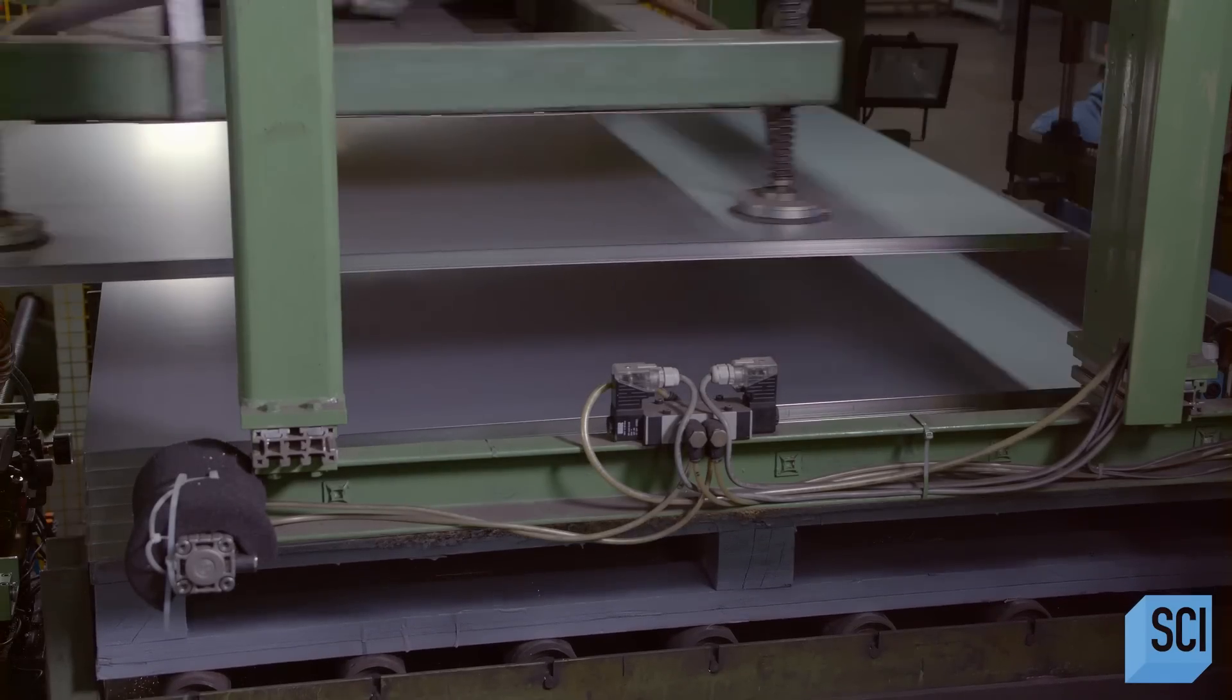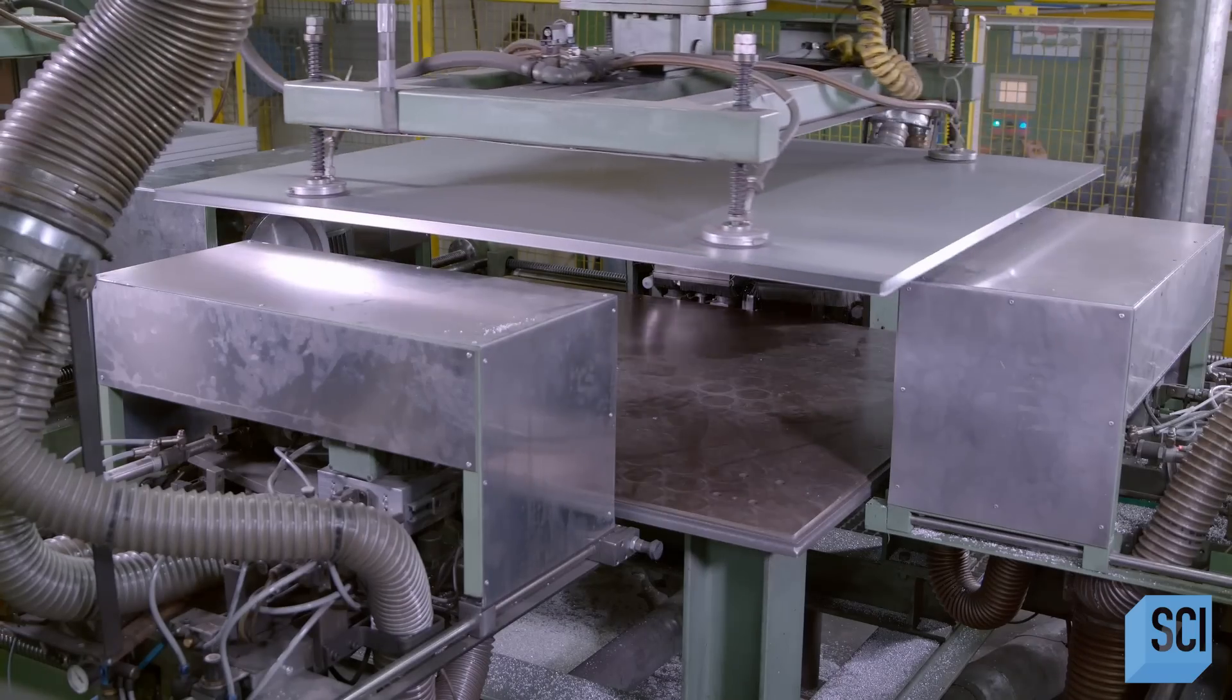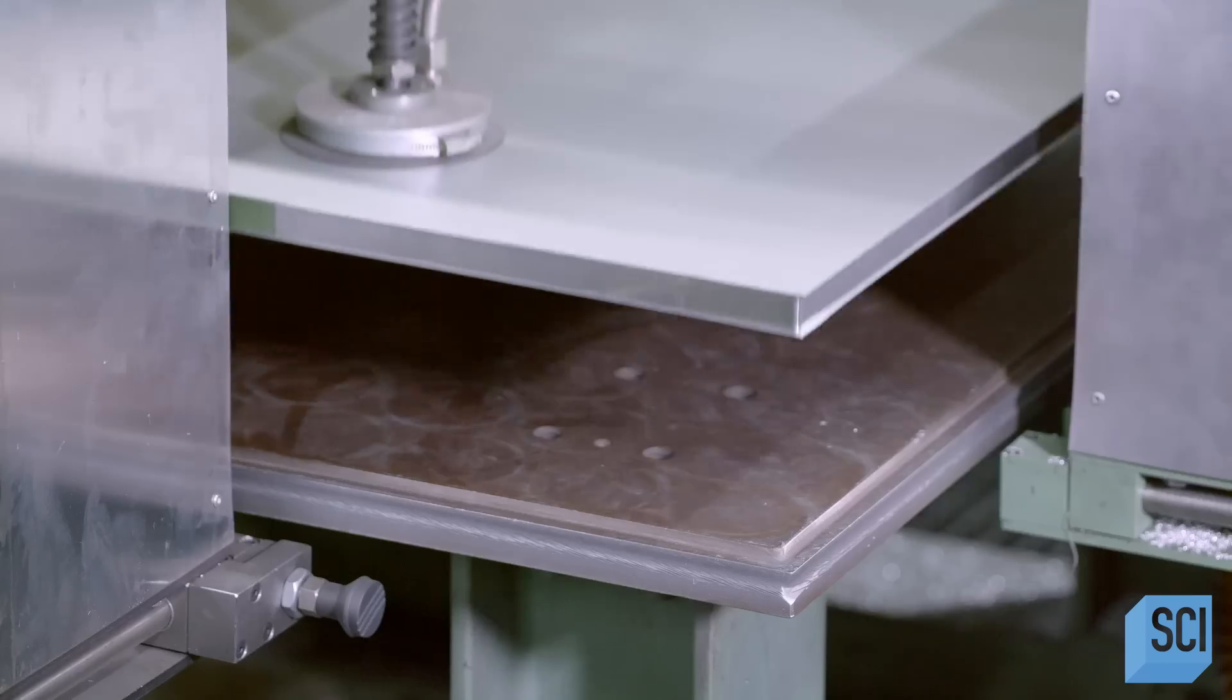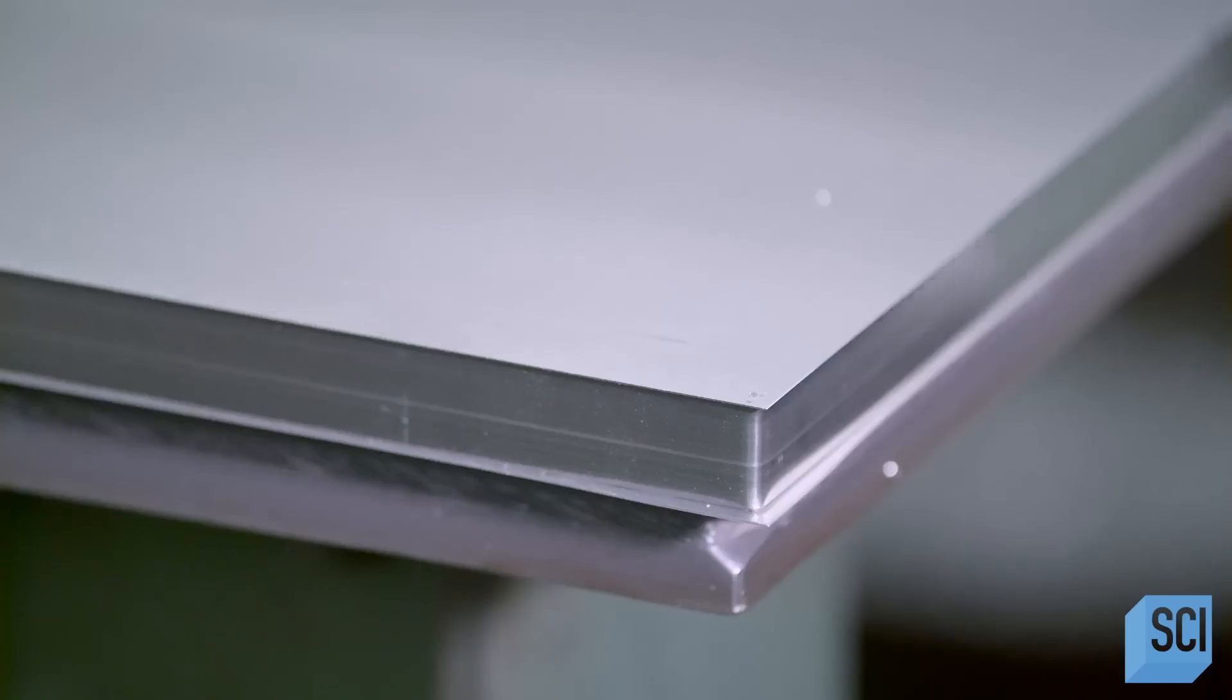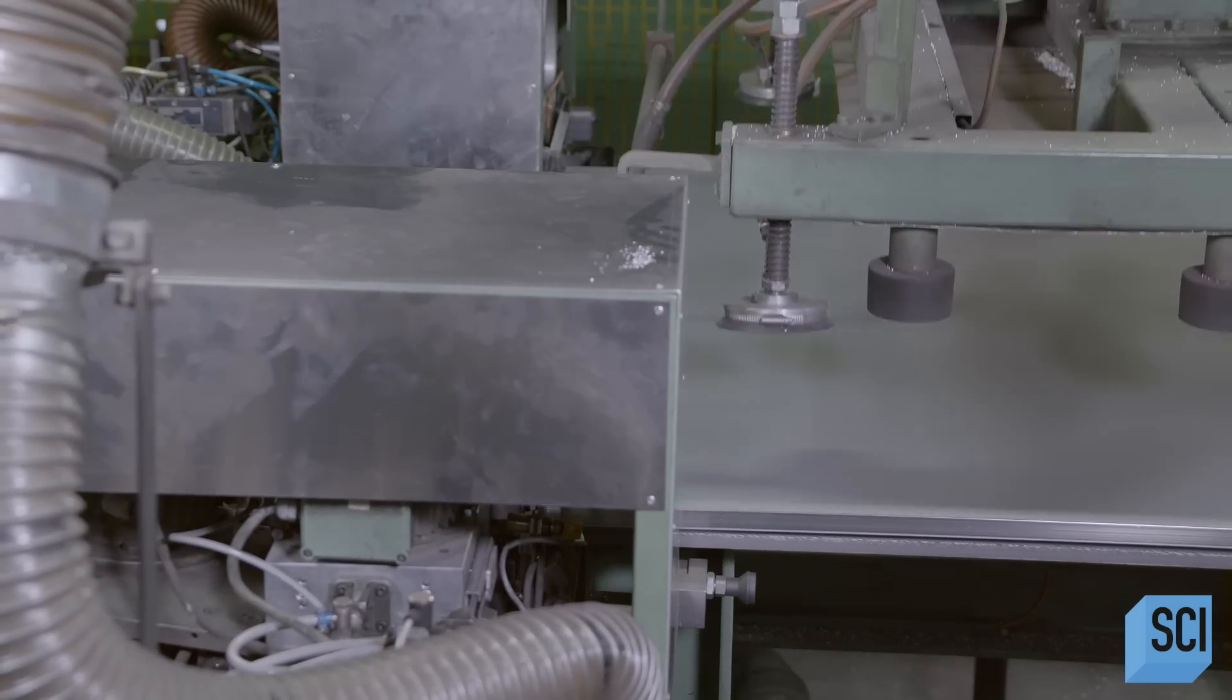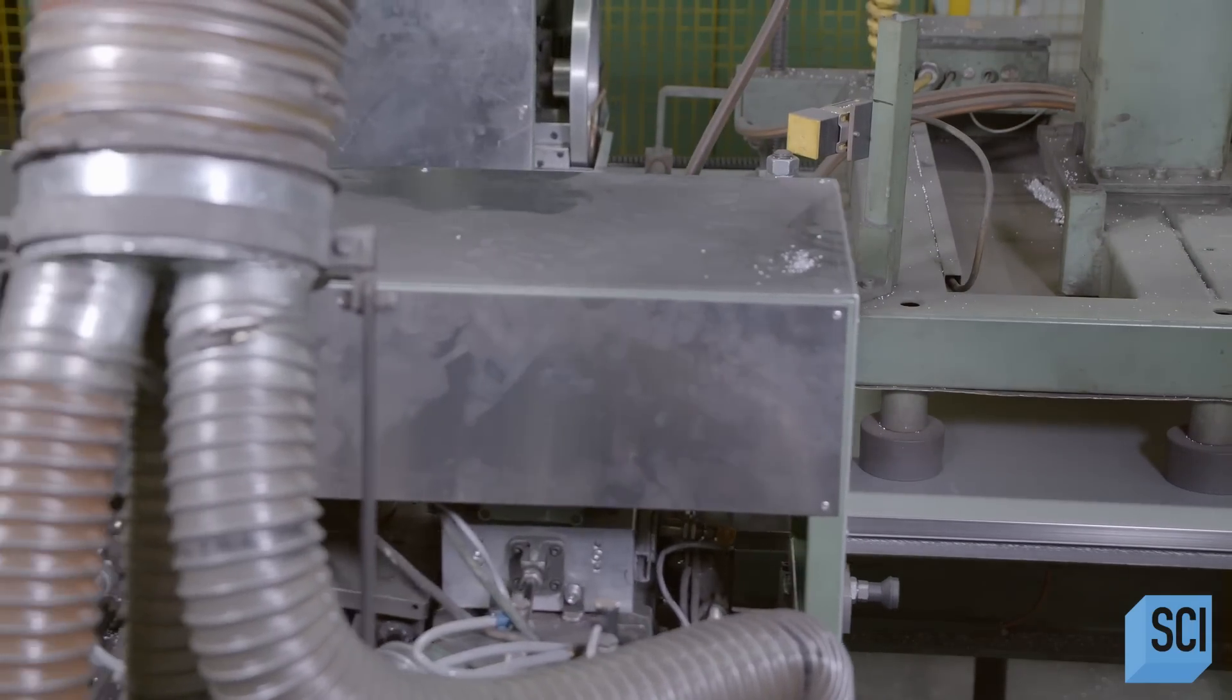Each plate half goes through an automated milling machine. The machine trims any excess material from all four sides to ensure the table won't have any sharp edges.